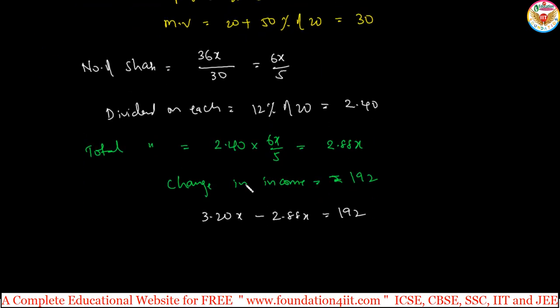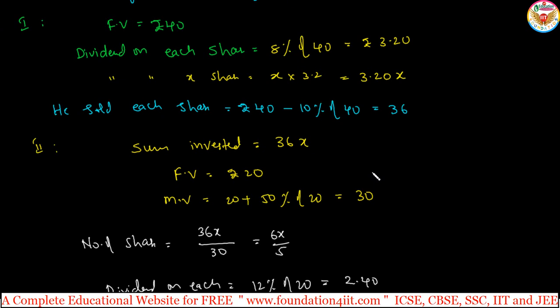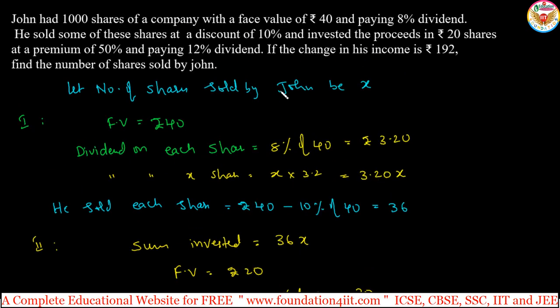3.20 from this, dividend on X shares, 3.20X minus 2.88. By difference, this will get X value. If you take X common, 3.2 minus 2.88 is equals to 192. Then from this calculating, you will get 600. Just subtract this and take right side and divide. Number of shares is equals to 600. The number of shares sold by John is total 600.